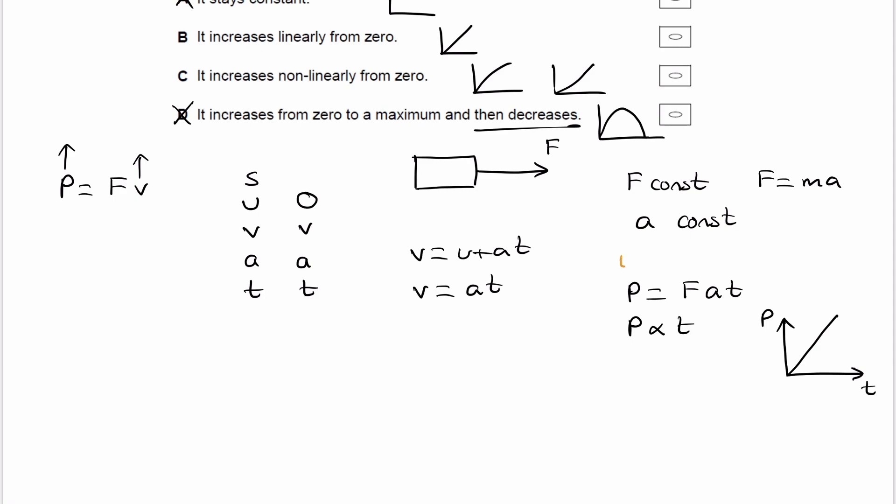Also the gradient of this graph, this equation here P is equal to Fat is of the form y is equal to mx, where y is equal to P, m is equal to Fa, and x is equal to t.